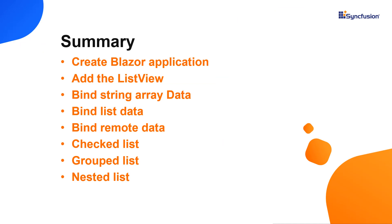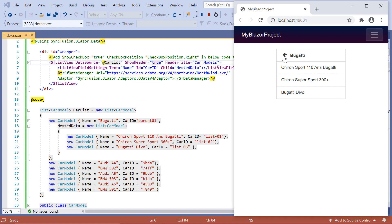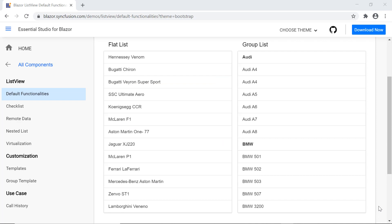Now let me make a quick summary of what we have seen in this video. I have shown you how to create a Blazor WebAssembly app and add a ListView component to it. And then I have shown a few of its basic functionalities like how to bind different types of data, group list items with checkboxes, and add nested list items. You can download this working example from the GitHub link in the description below. You can also look into getting a free license key to use our Blazor products if you are eligible for our community license.